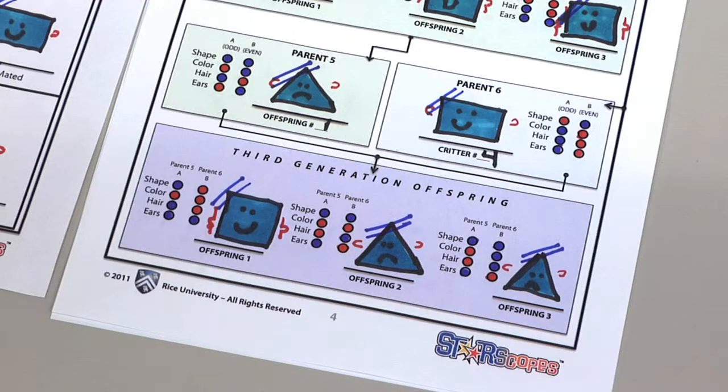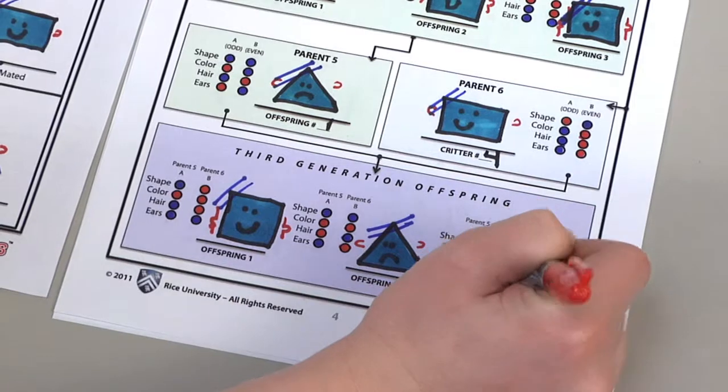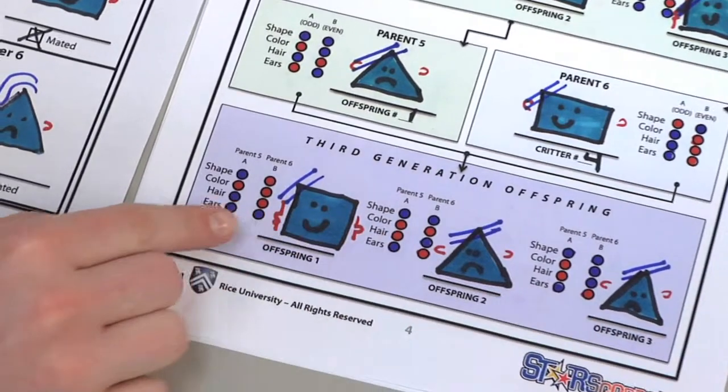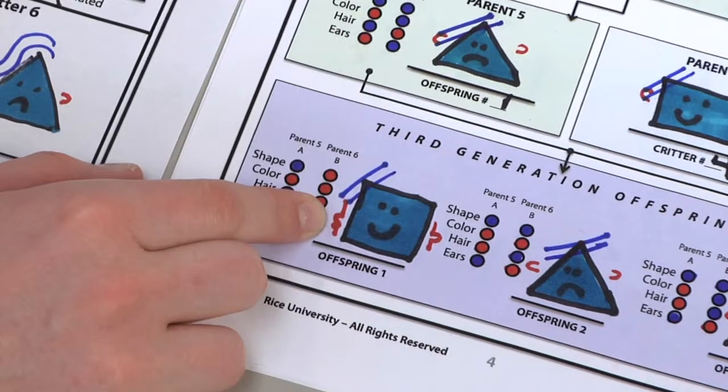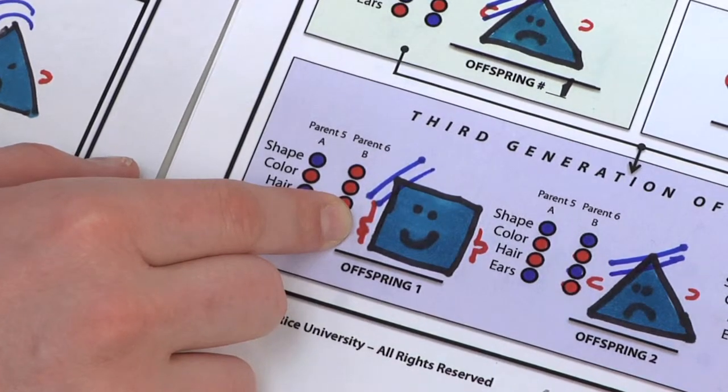Continue in the same manner to produce the third generation offspring. The breeding goal is to end up with at least one offspring with one of the four traits showing their recessive forms in the third generation.